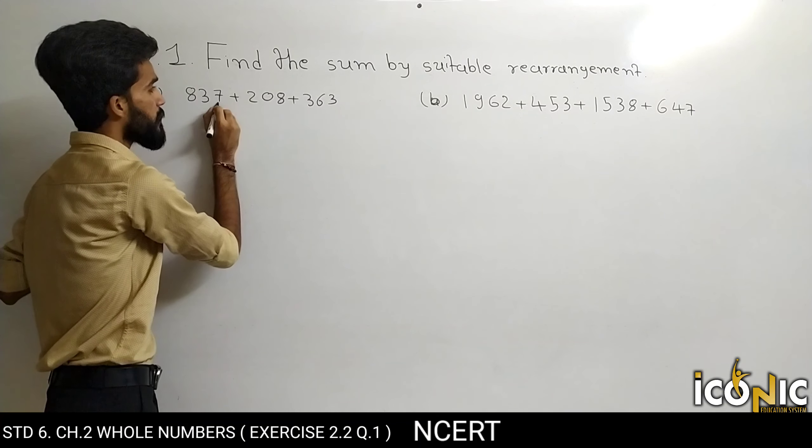Second example mein, yahan par hum pehle peeche ka digit dekhenge ki kya kisi mein 0 aa raha hai. 2 plus 3 is 5 — nahin aa raha. 2 plus 8 is 10 — yani 0 aa raha hai. Toh yeh wala term aur yeh wala term hum saath milaa lenge. Chalo rearrangement karte hain.